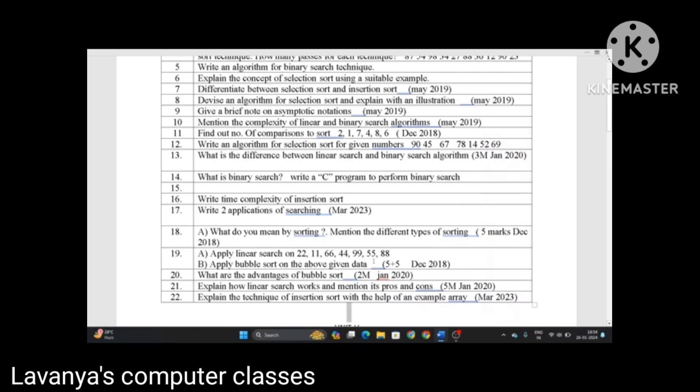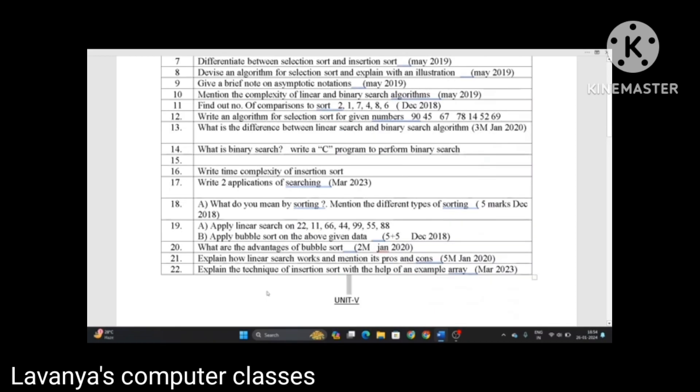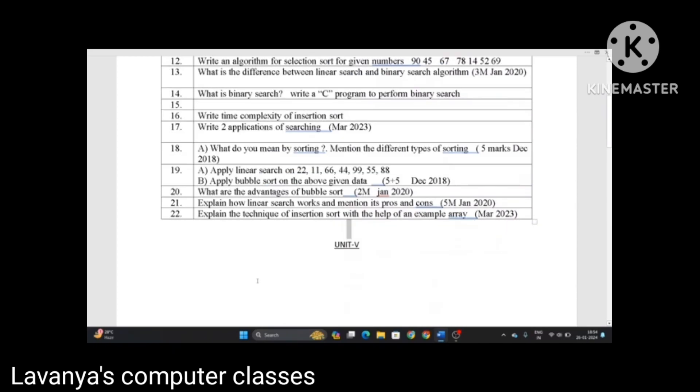Apply linear search on these numbers. Apply bubble sort on the above given data. 5 plus 5, 10 marks question, December 2018. What are the advantages of bubble sort? Explain how linear search works and mention its pros and cons, and explain the techniques of insertion sort with the help of an example array, March 2023.